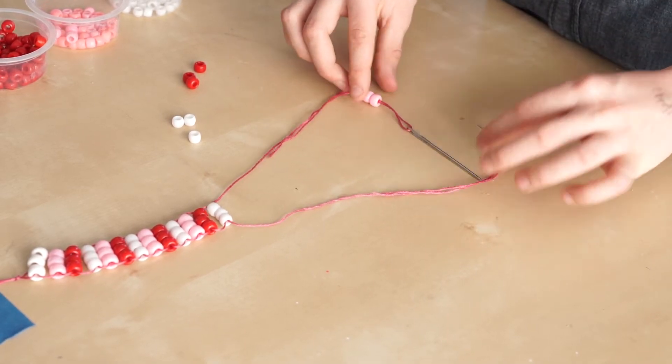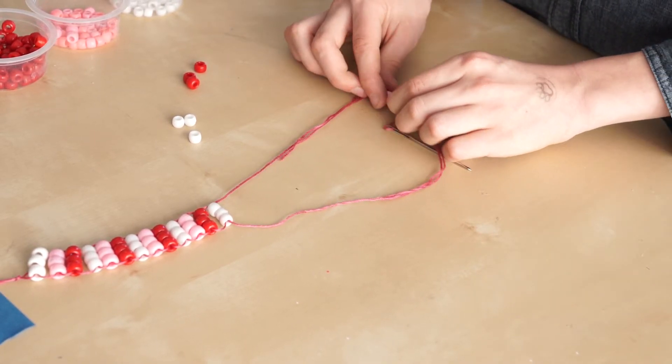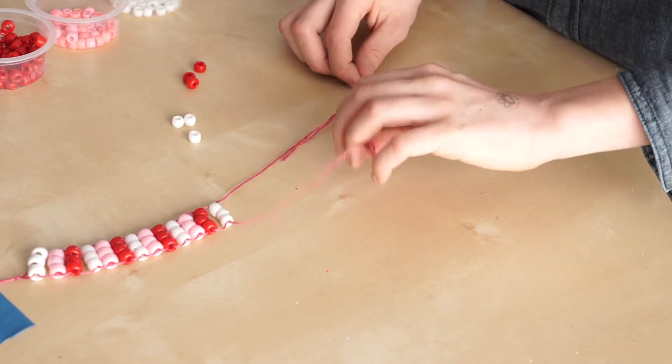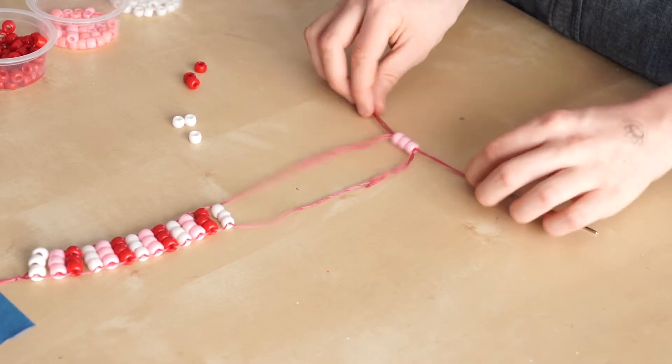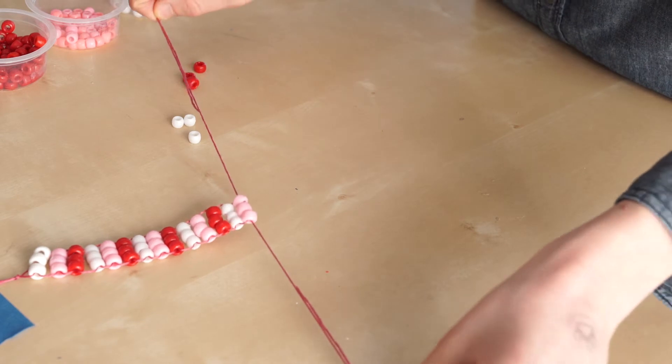Now, take your other side and go through the holes in the opposite direction. If you're having trouble, using a doll needle is just the way to go. Pull your strings in opposite directions.